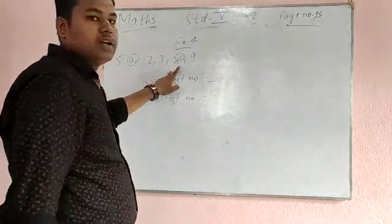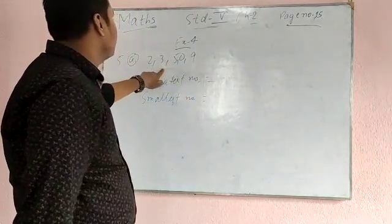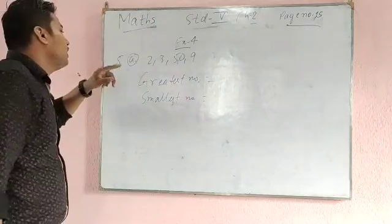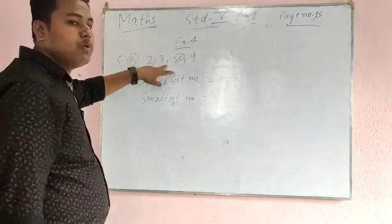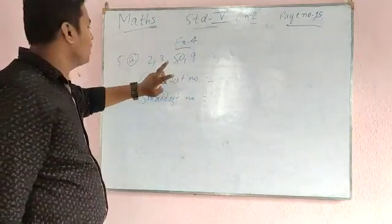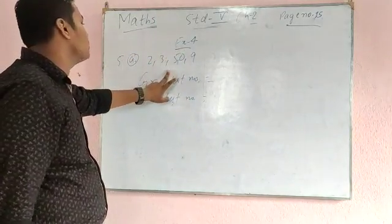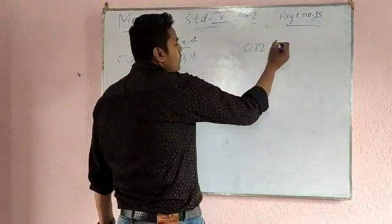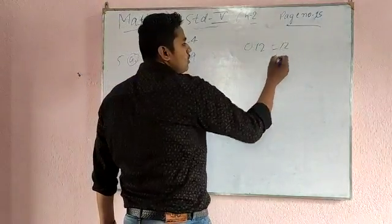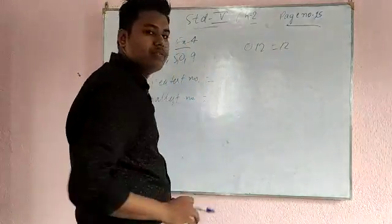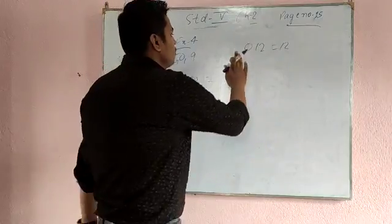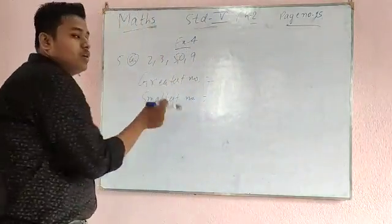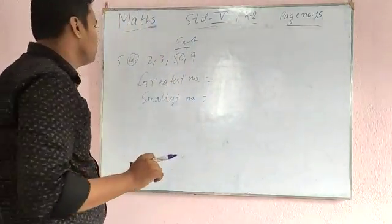We never start from 0. Because if you write 0, 1, 2 — it means 12. So there is no need to write 0 first. That's why we will never start from 0, either for the greatest number or for the smallest number.